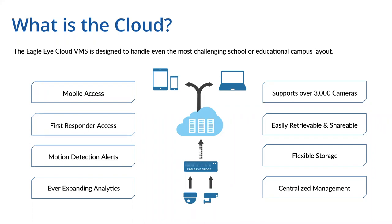Whether you have existing analog cameras or newer IP cameras that aren't working to your liking on your current system, we have a good probability of working with those cameras. So if you want to move to Eagle Eye, you don't necessarily have to rip and replace all your existing equipment. Easily retrievable and shareable video is also a huge component. In an emergency, you can share video with a law enforcement officer not regularly set up as a user. You can go back and view historical footage based on an event from days ago, with flexible per-camera retention times. Centralized management allows a district with 10 schools and 20 campuses to bundle all cameras into one platform.